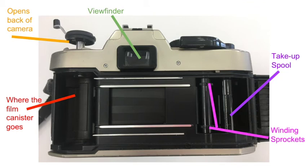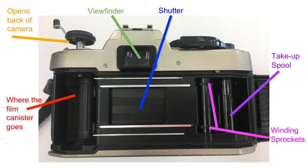To the left of the take-up spool are the winding sprockets. There are two sets — one at the top and one at the bottom. The film has sprocket holes at the top and bottom which match up with the winding sprockets. As you advance the film, these help move your film forward and keep it lined up properly. In the center inside of the camera is the shutter — a series of blinds that open and close when you take a photograph. How long the shutter is open depends on what you set on the shutter control dial.